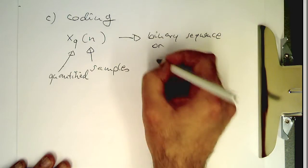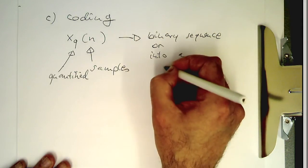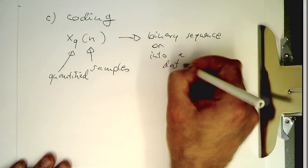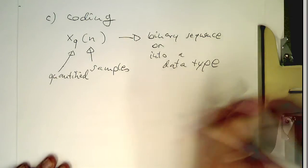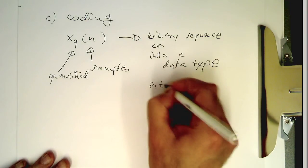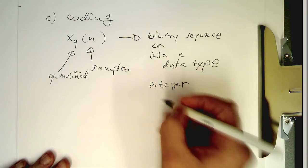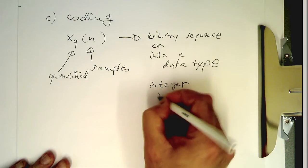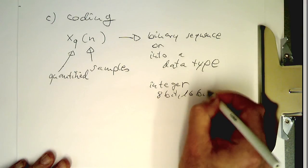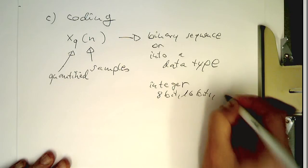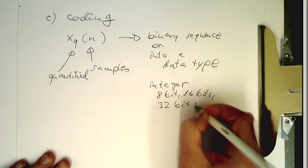Or more specifically into a data type. Classical data types are, for example, integer. And they are integer with 8-bit, 16-bit, or 32-bits, which are quite popular for audio.